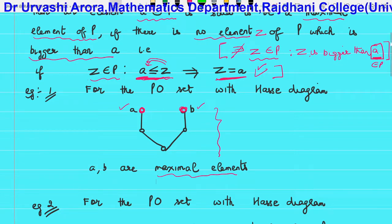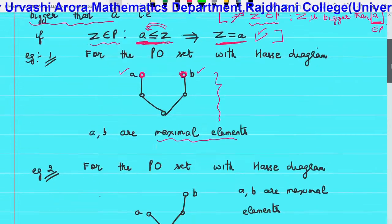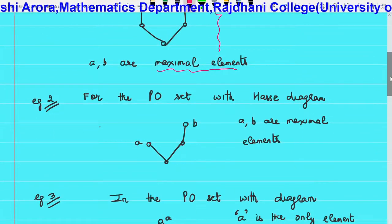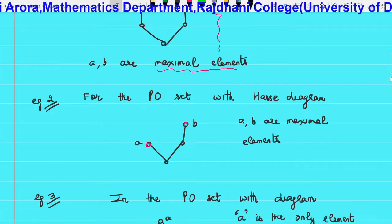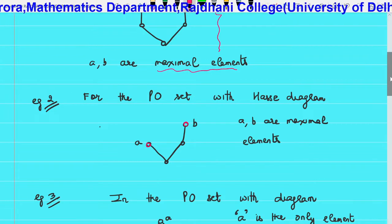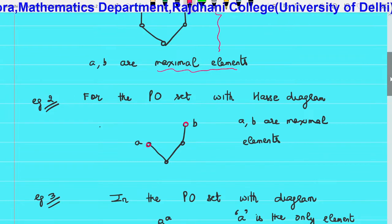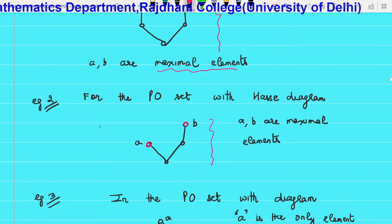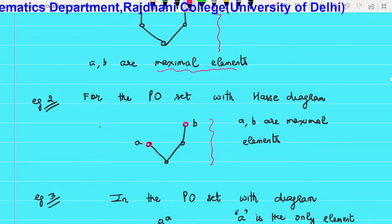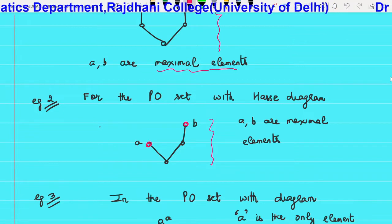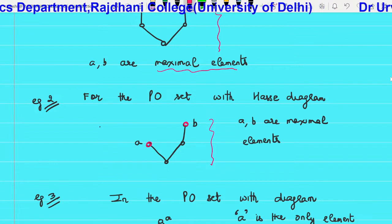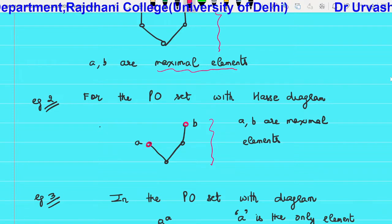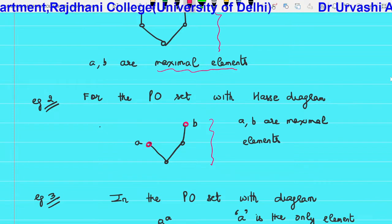Similarly, in Example 2, there are also two maximal elements A and B because there is no element of the given PO set which is above A, and no element which is above B. Both are lying at the top, so both are maximal elements. This is another example of a PO set with more than one maximal element.